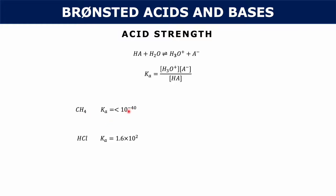Weak acids like CH4 are going to have Ka values that are really low — for example, 10 to the negative 40. But if you have a really strong acid like hydrochloric acid, your Ka is going to be really high; hydrochloric acid has a Ka of 1.6 times 10 to the negative 2. The reason weak acids have low Ka values is because weak acids don't dissociate very much, so the concentration of your products ends up being really low and the concentration of your reactants really high, producing a very low Ka.